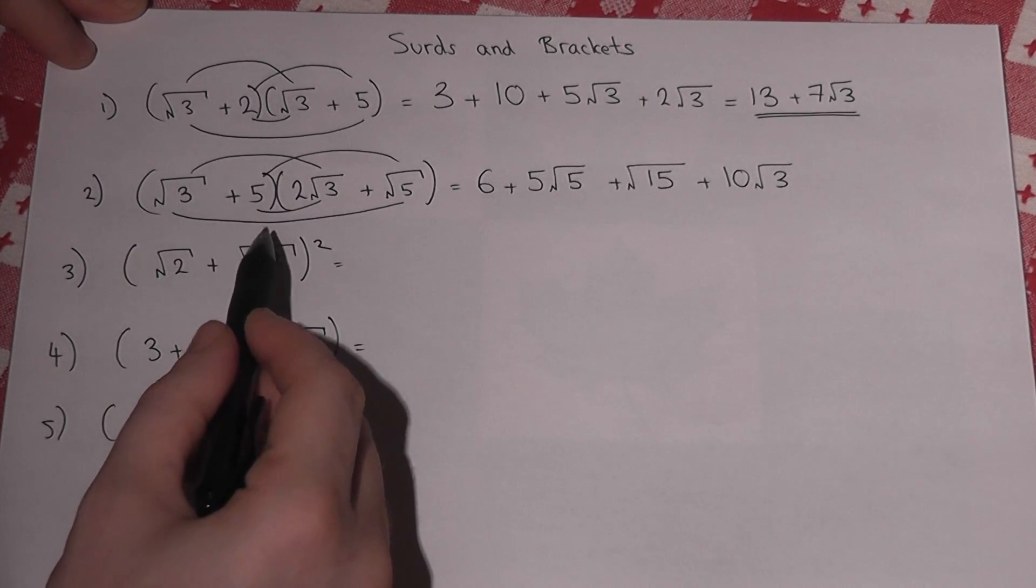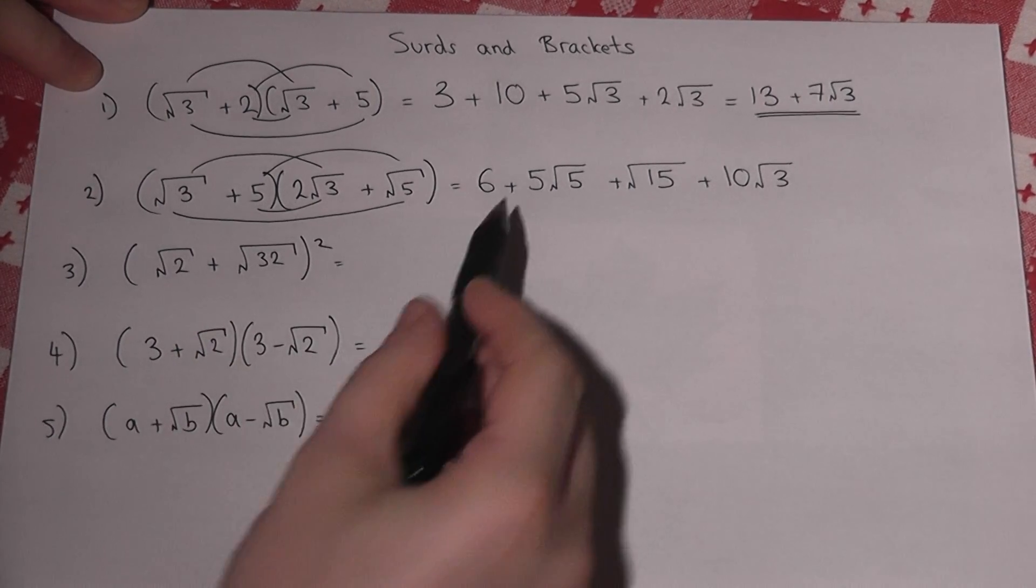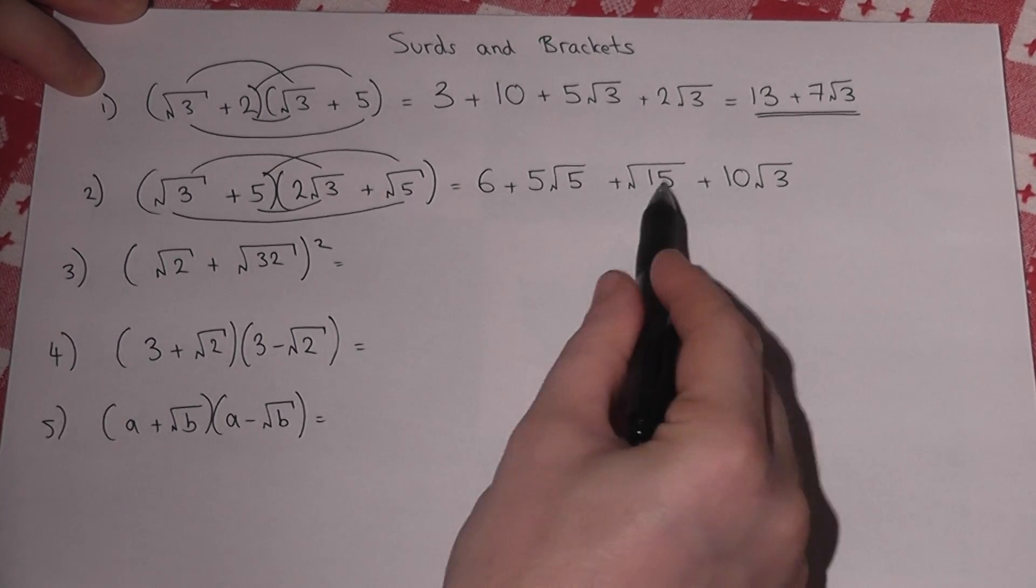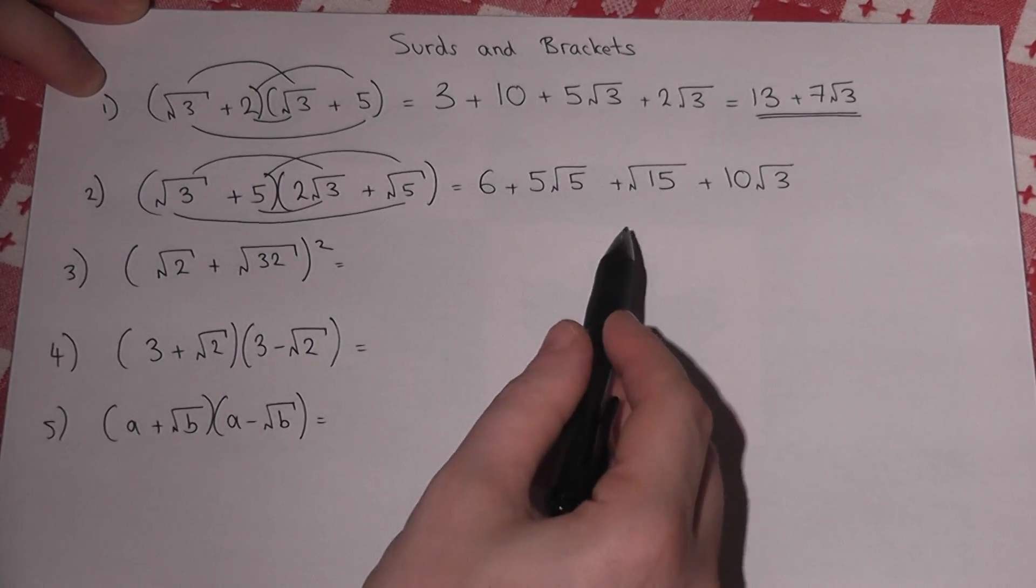And if you're unsure of that, see the separate video on timesing together surds. Now this answer's got an integer, a root 5, a root 3, and a root 15. They're all different, they cannot be made any simpler than that. That is the final answer.